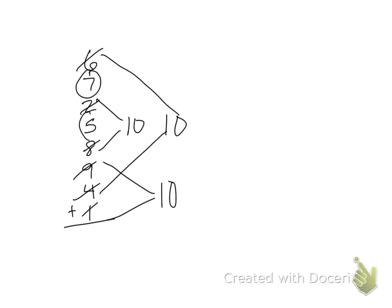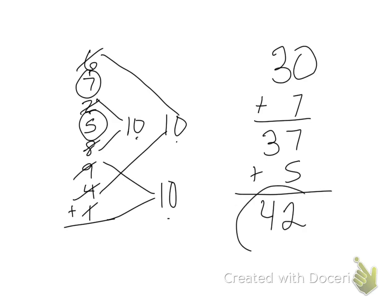So I'm left with seven and five. So we add up my tens, ten, twenty, thirty. So I've got thirty. So then we do thirty plus seven is thirty-seven. Thirty-seven plus five is forty-two. And that's my final answer.